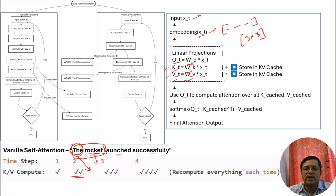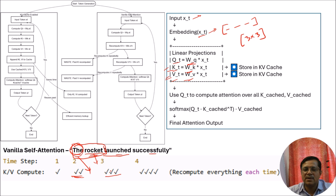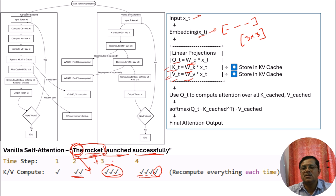So here we will do the calculations two times. When we reach 'launched', we will have three words in the sequence. For 'launched' as a new token, we have to calculate the projection matrices for key and value. But at the same time, we have to repeatedly calculate the projection matrices for 'rocket' and 'the', because those are previous tokens. So we will do the same computations three times. Similarly, when we reach the fourth word, we will do the same computations four times. This is a repetitive calculation.